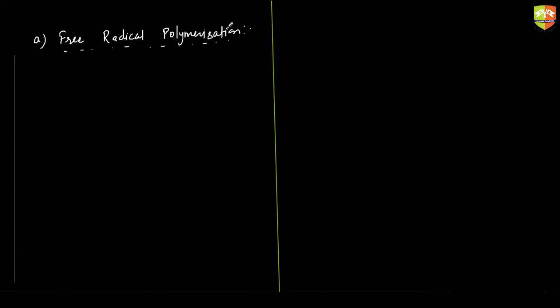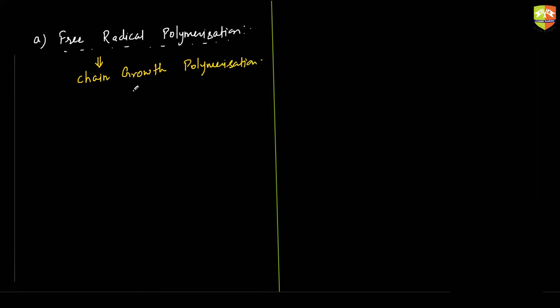Free radical polymerization: this mechanism involves the formation of free radicals, and that's why we also call it chain growth polymerization. In free radical mechanism, there is an initiation step, then chain propagation, then chain termination. And since free radicals are involved, this kind of reaction is very difficult to stop.